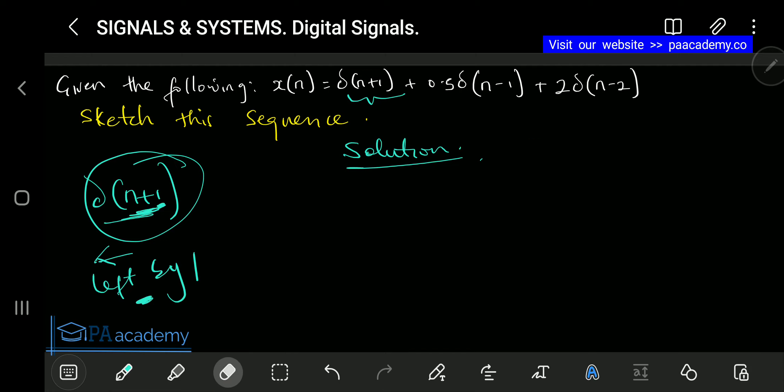Having analyzed this, let's look at the next one. The second one is 0.5δ(n-1). That means the amplitude is 0.5. For the fact that it is n-1, that means it is shifted to the right by 1. For the third one, we are having 2δ(n-2). For this, the amplitude is 2, and this is also shifted to the right by 2.